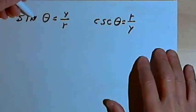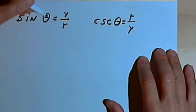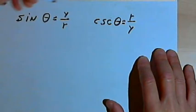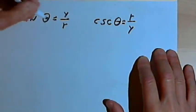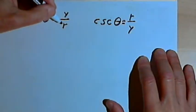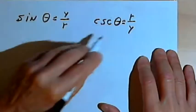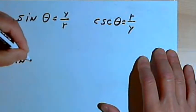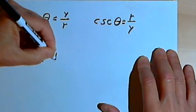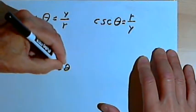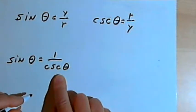So let's take a look at them. We know that the sine of theta equals y over r, and the cosecant of theta is r over y. Remember, in terms of a triangle, y would be the leg opposite theta, and r would be the hypotenuse. Now let's take this fact and create an identity that says the sine of theta equals 1 over the cosecant of theta. Let's prove that that's true.